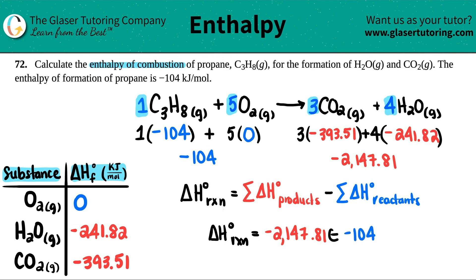And remember, if you're minusing by a negative, it's keep change change, right? So you get negative 2043.81. And just know that the standard units for delta H is kilojoule per mole. They gave you a hint over here as well. So kJ per mole.